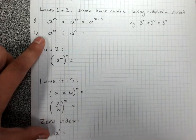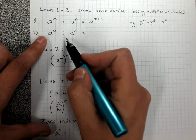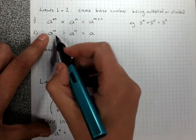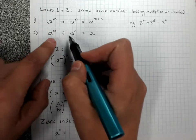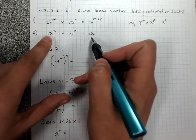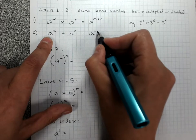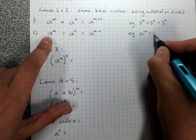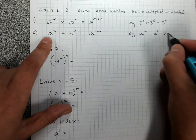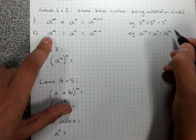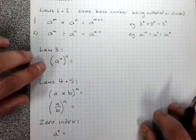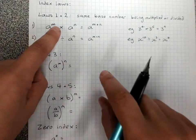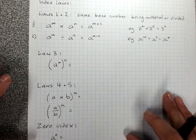Law 2 is the opposite, because dividing is the opposite of multiplying. When I've got the same base number of two powers and I'm dividing them, keep the same base number and subtract the indices. For example, x to the 10 divided by x to the 3 — keep the same base x, 10 minus 3 is 7. So laws 1 and 2 go together: same base numbers, multiplying or dividing, add or subtract the indices.